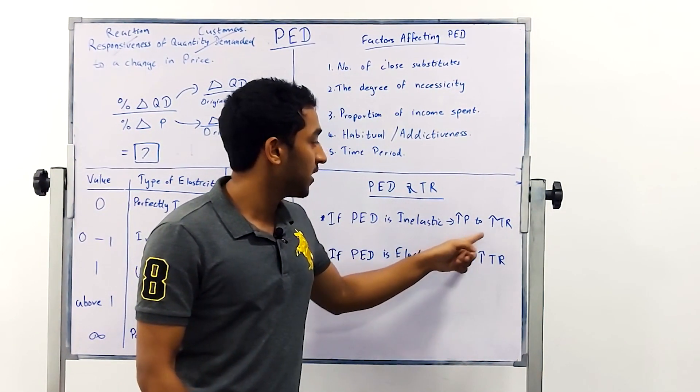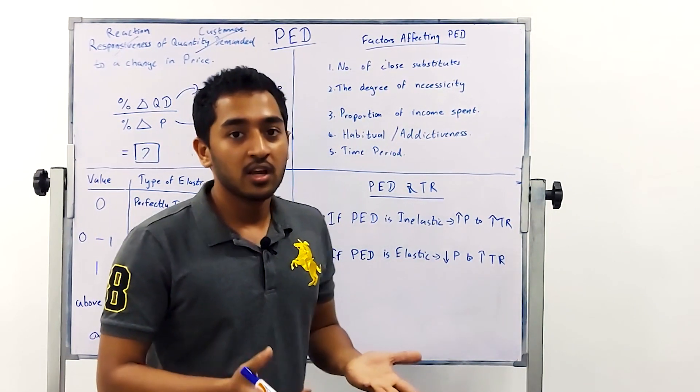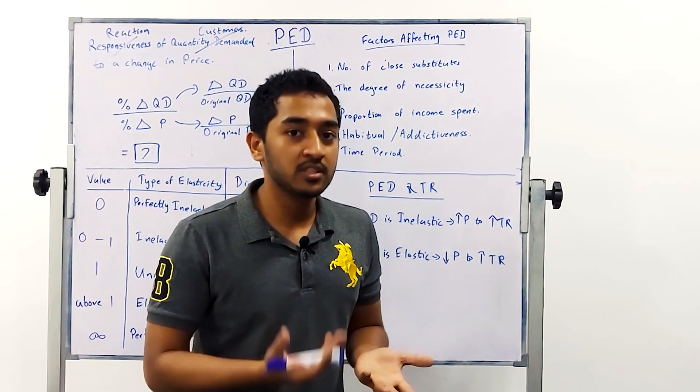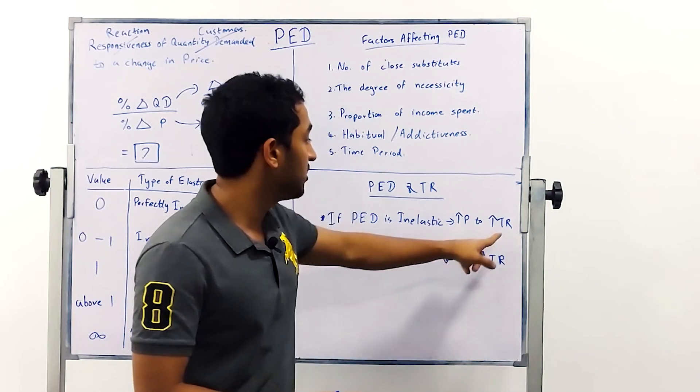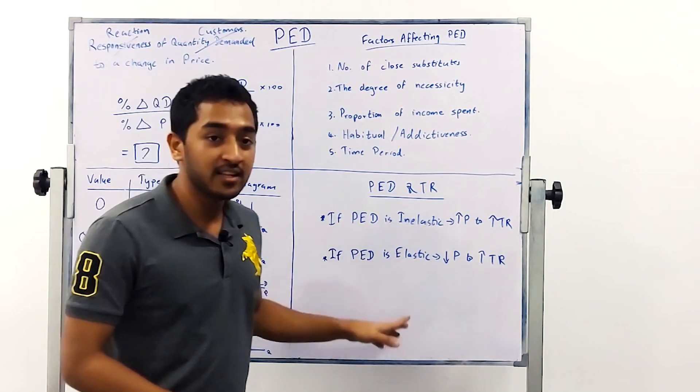If your PED is inelastic indicating it's between zero and one you can increase price to increase total revenue. Like the sale of cigarettes you can increase the price, people will still continue to buy and then you will increase your total revenue.